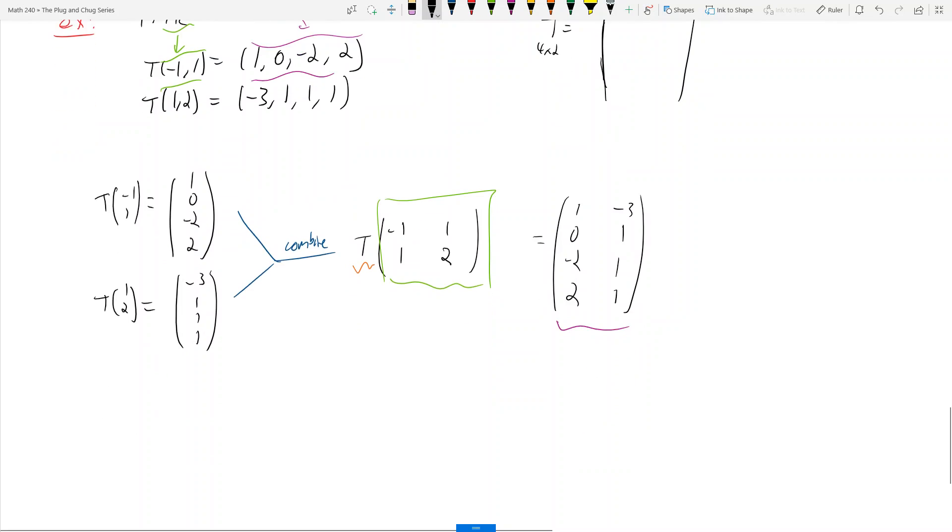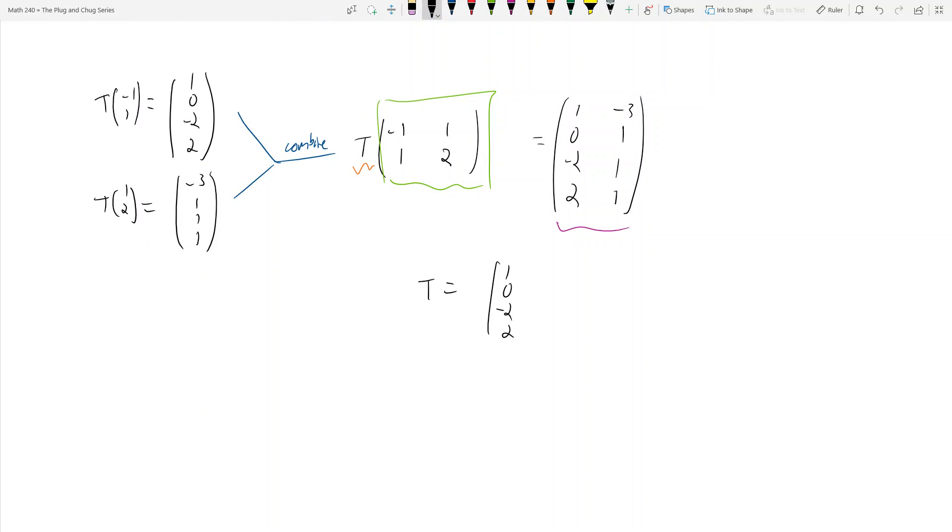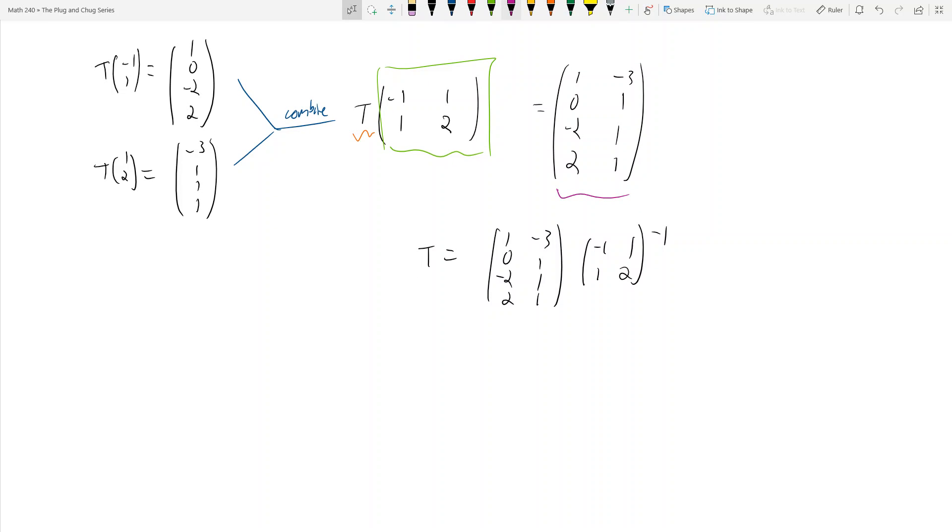So T is just going to be (1, 0, −2, 2; −3, 1, 1, 1) times the inverse of (−1, 1; 1, 2), right? Because if I multiply the inverse here, then I have to multiply the inverse on the right side over here. And by multiplying the inverse on the right side, this guy times (−1, 1; 1, 2) inverse. And so what is (−1, 1; 1, 2) inverse? Well, that's equal to (1/3)(2, −1; −1, −1), right? What's the determinant? Determinant is −3. So we got 1 over −3 times, flip the diagonals, and then take negatives on the off diagonals. And so that's going to be our inverse.